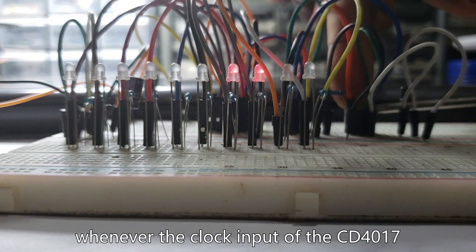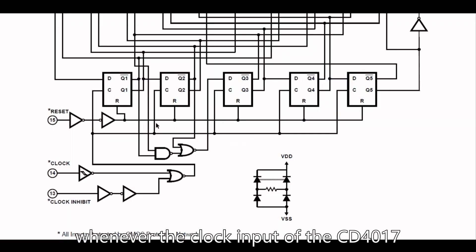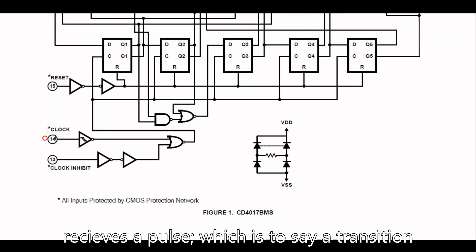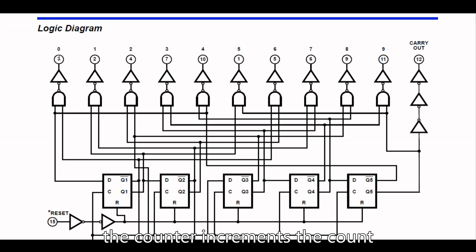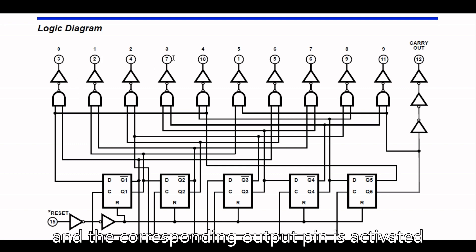Whenever the clock input of the CD4017 receives a pulse, which is a clock transition, the counter increments the count and the corresponding output pin is activated.